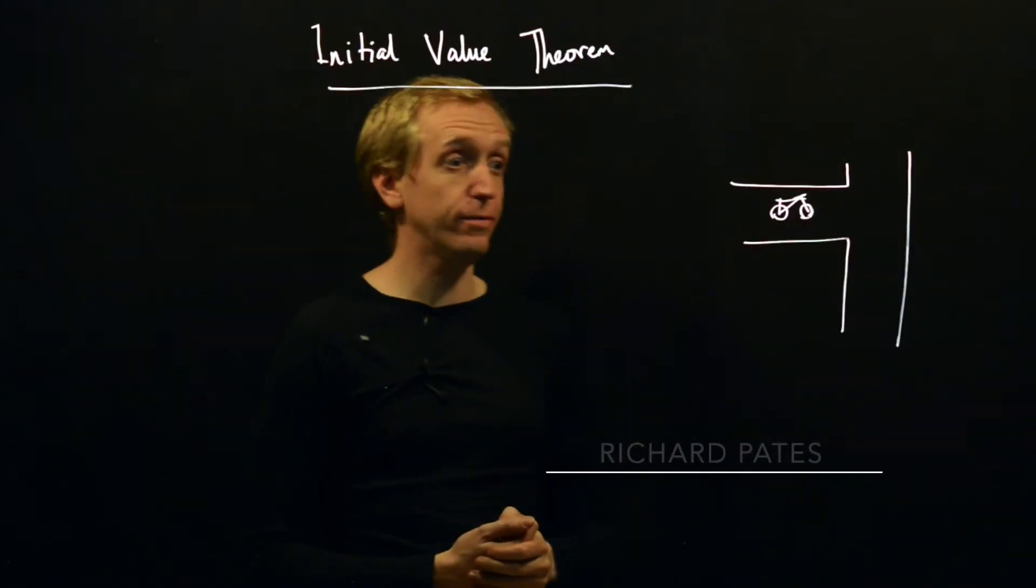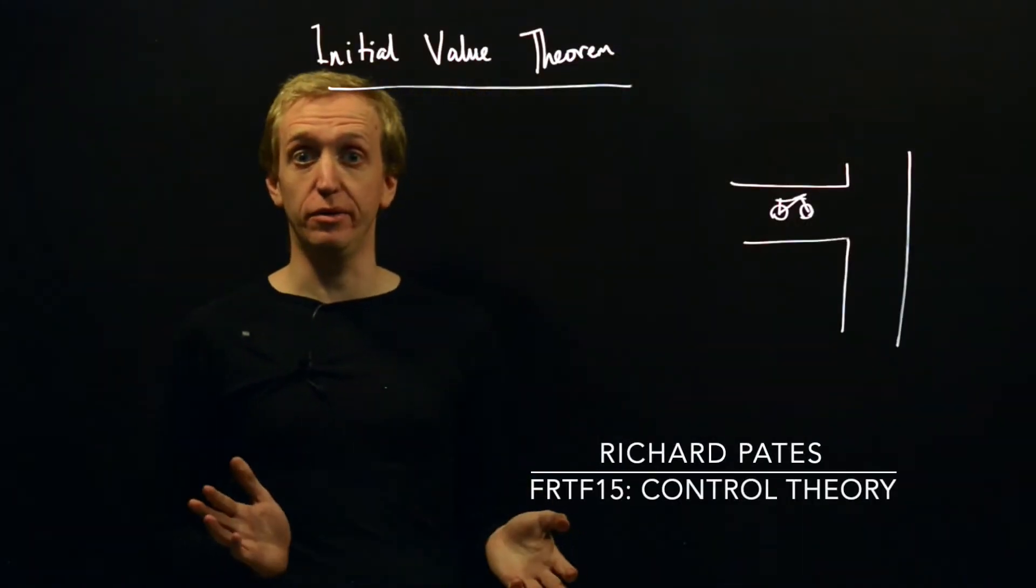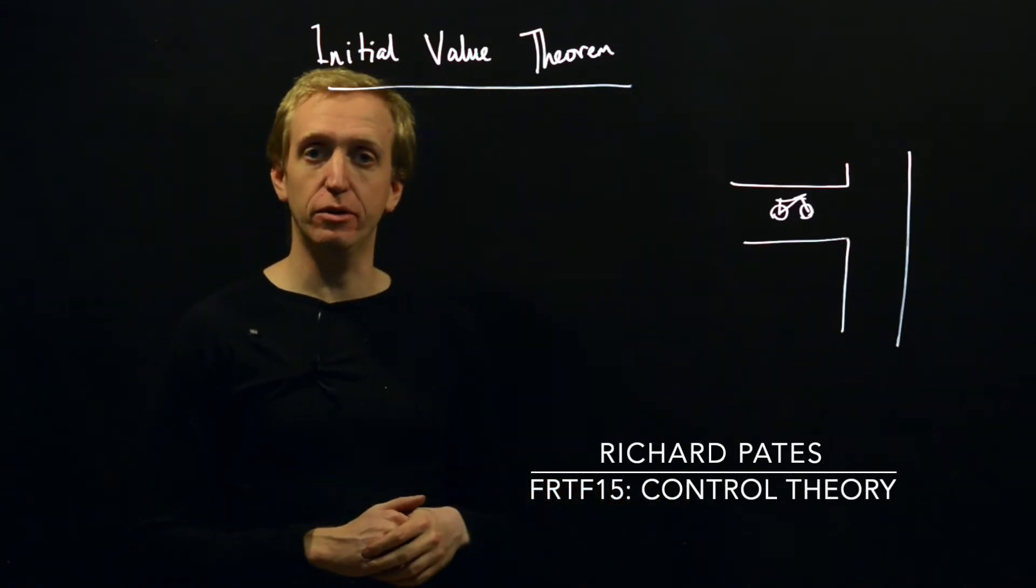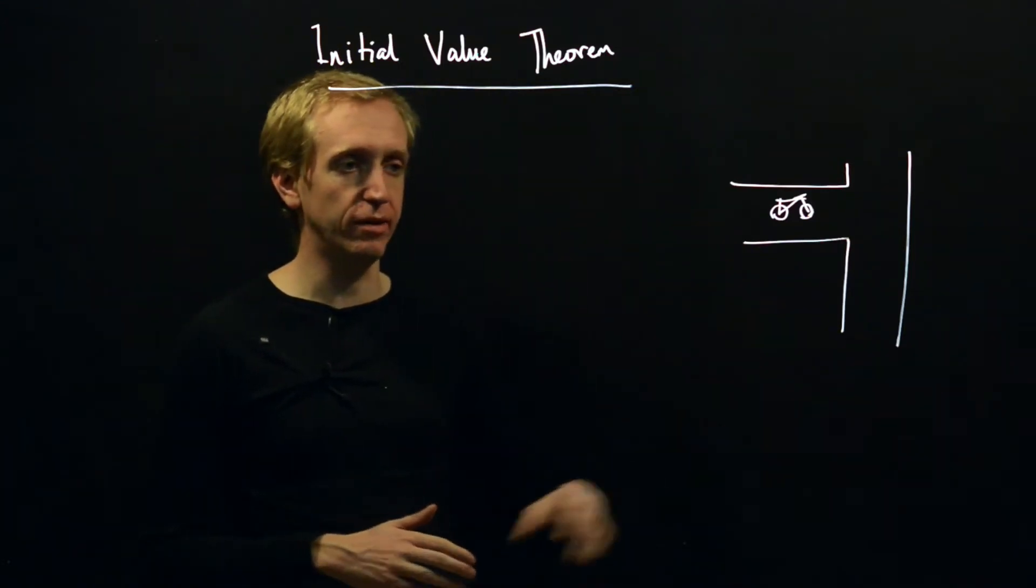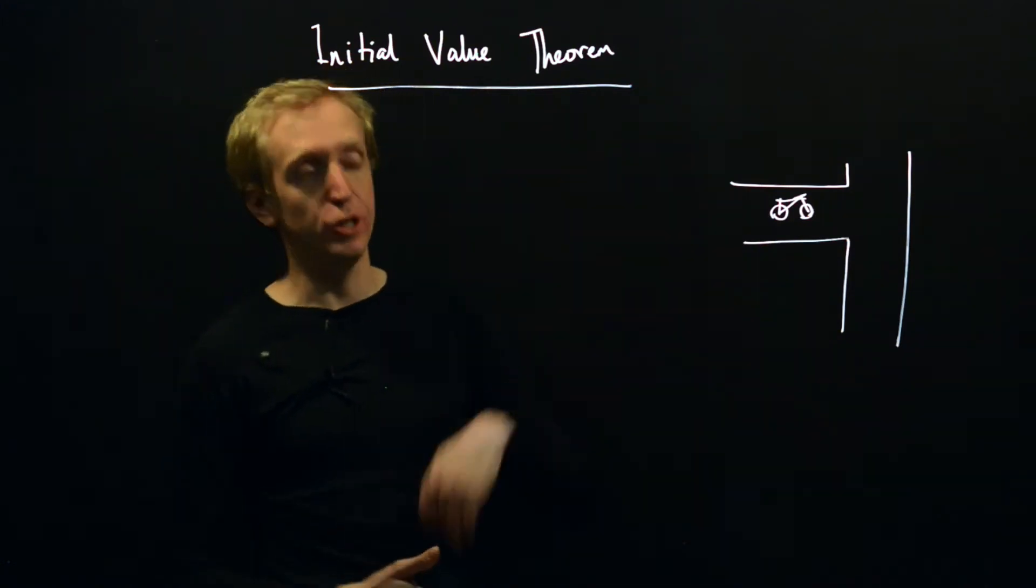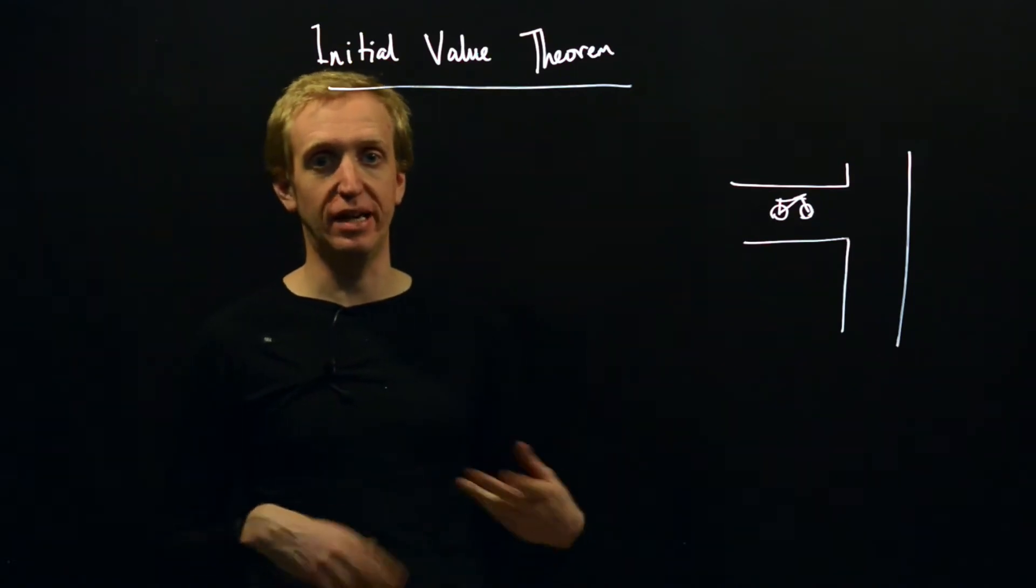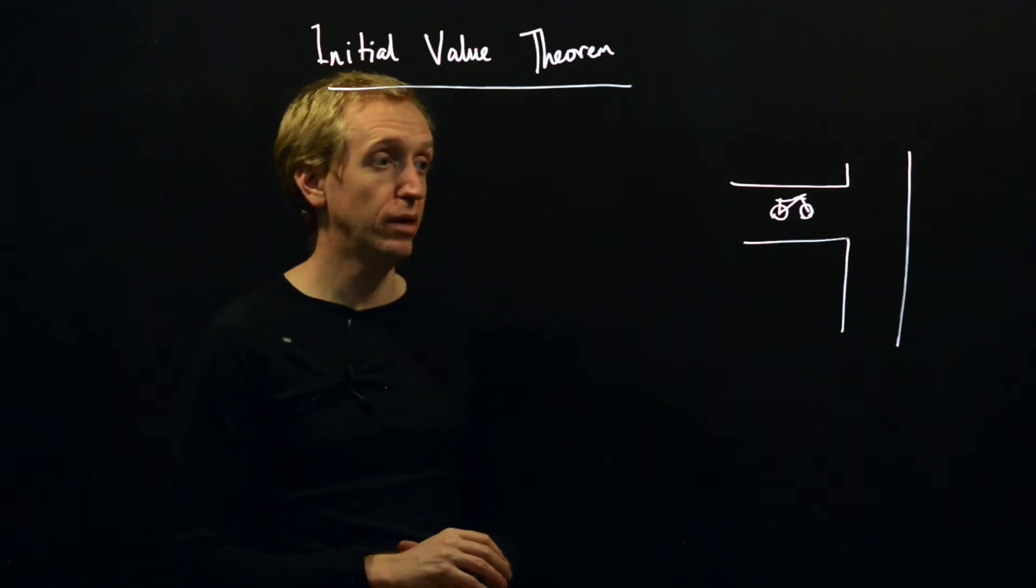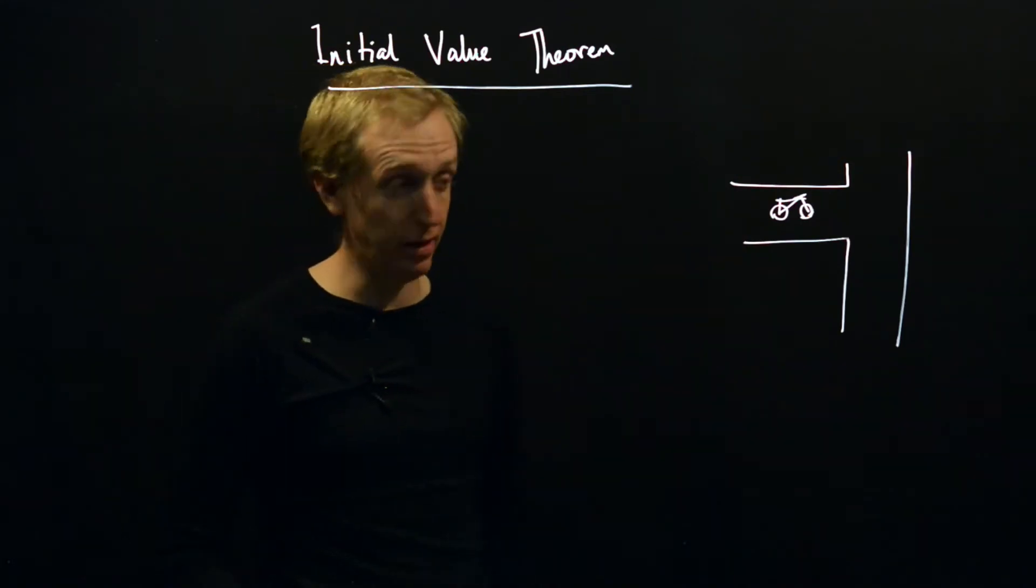We're now going to talk about a counterpart to the final value theorem called the initial value theorem. Whereas the final value theorem let you predict the long-term behavior of a signal based on properties of its Laplace transform, the initial value theorem does the opposite. It allows you to say things about the initial values based on things about the Laplace transform.